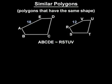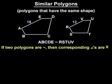It's important to understand the following properties of similar polygons. First, if two polygons are similar, then corresponding angles are congruent.